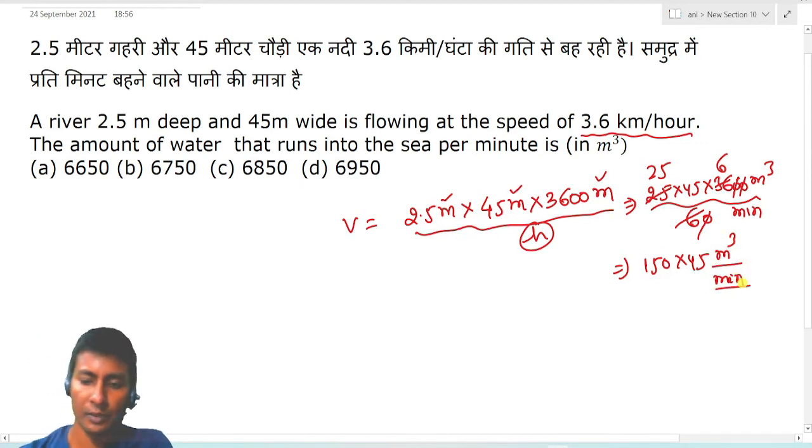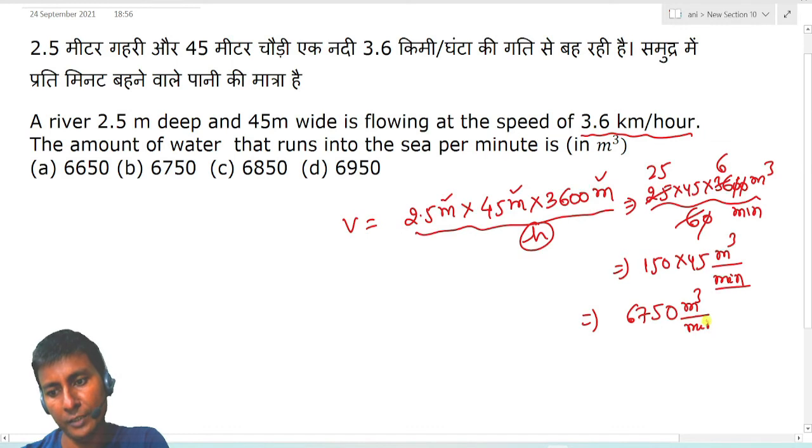If you multiply, then 2.5 into 45 is 112.5, and 112.5 into 60 gives you 6750 meter cube per minute. Correct? So my answer is option number B. Thanks for watching.